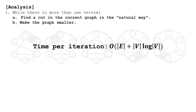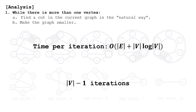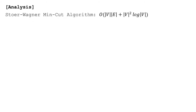At the end of each iteration we also merge a pair of vertices, so there are (number of vertices minus one) iterations total. Multiplying this by the time per iteration gives the total running time. We don't care about constants or lower-order terms.